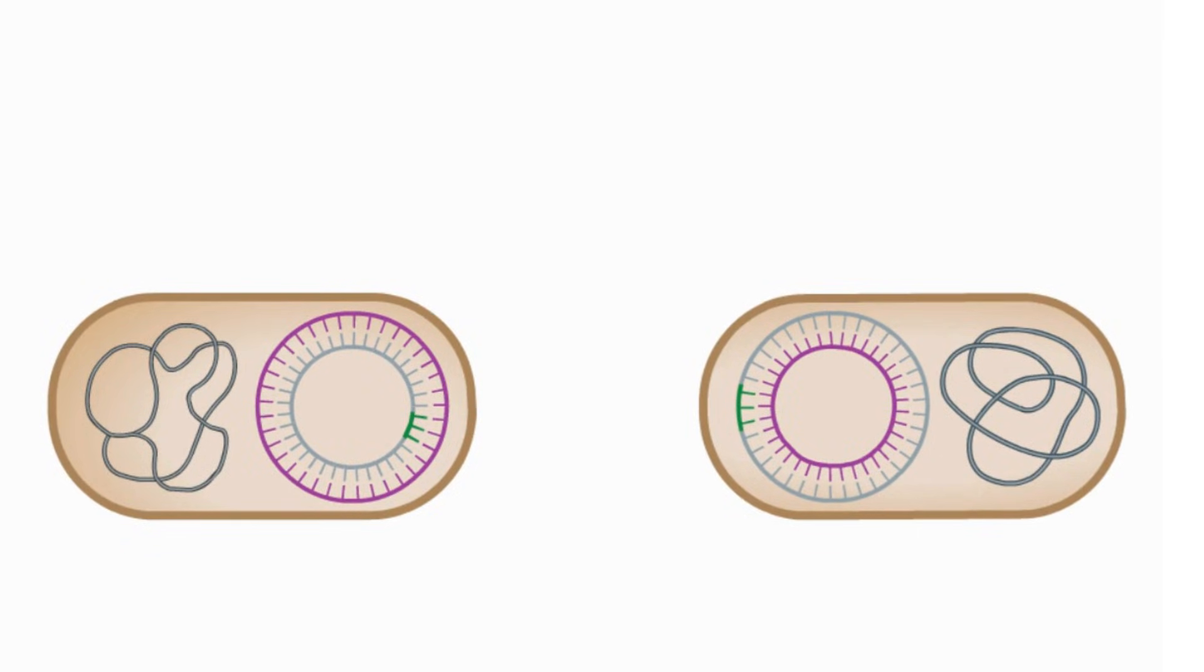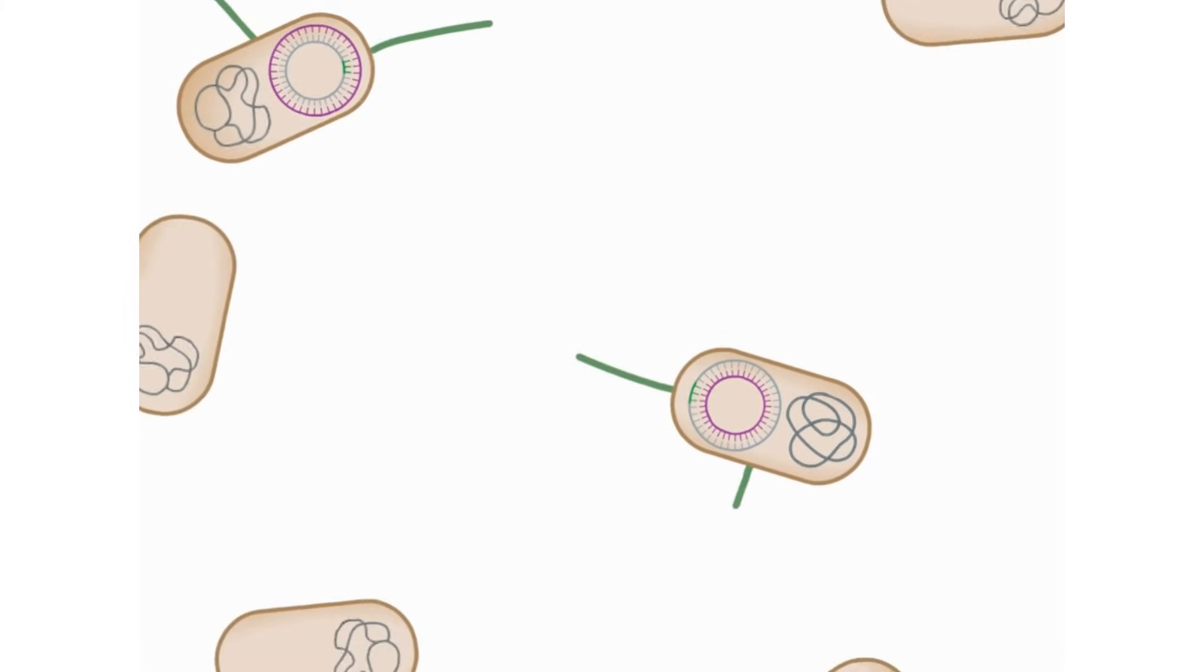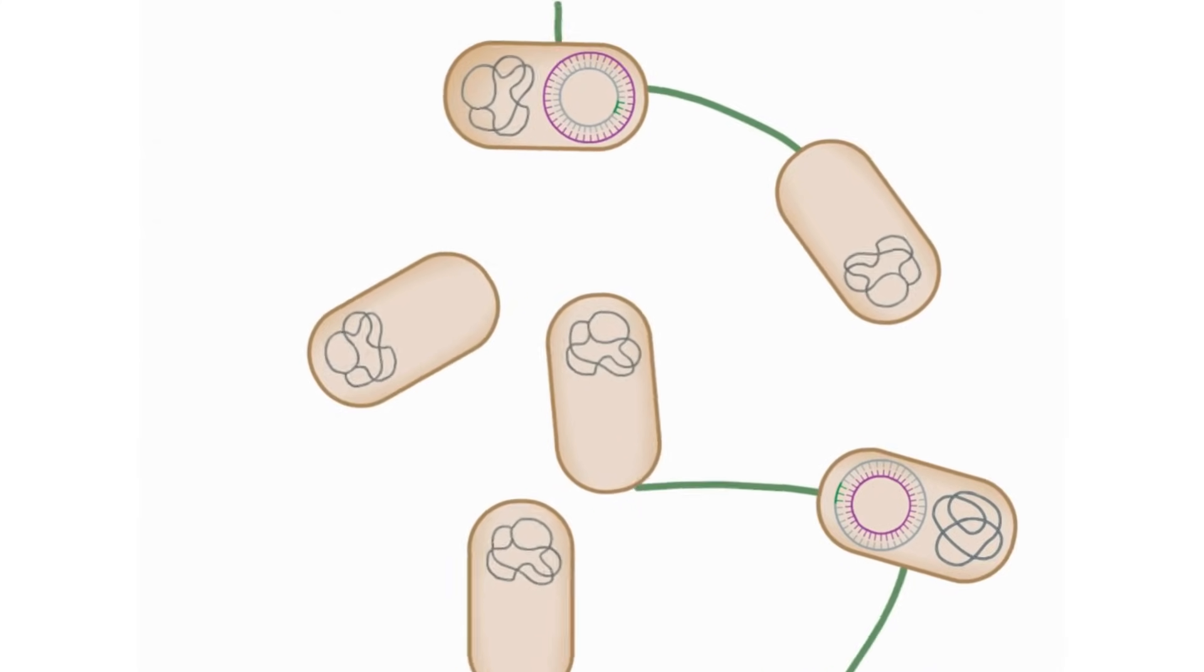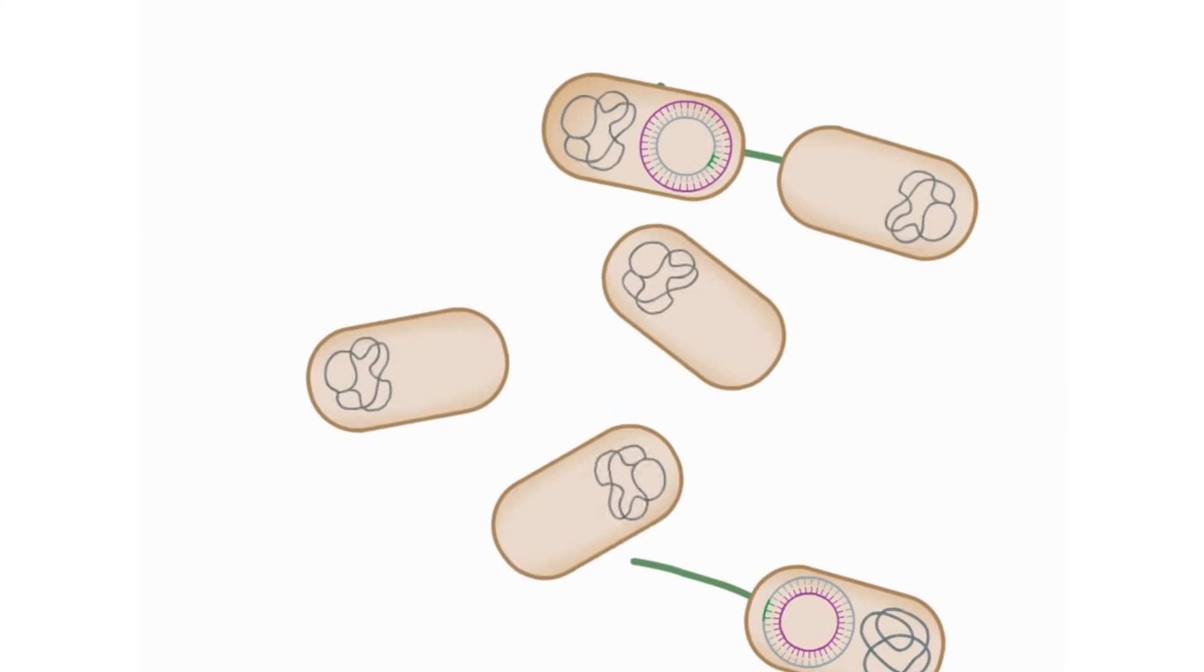The F-minus cell has been converted to an F-plus cell that is now capable of conjugating with another F-minus recipient. Consider that if the plasmid carries a gene for antibiotic resistance, the resistance trait can quickly spread through a bacterial population.